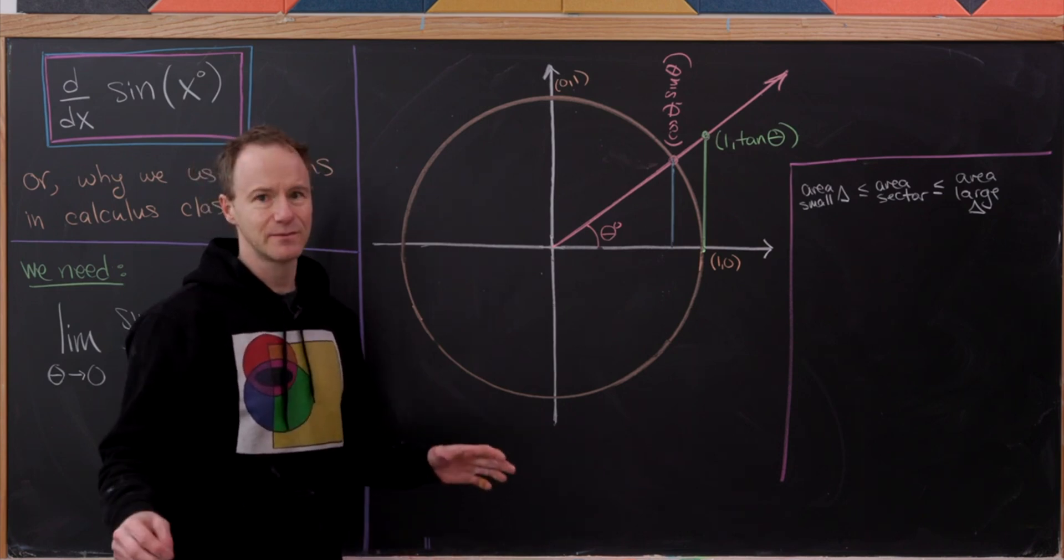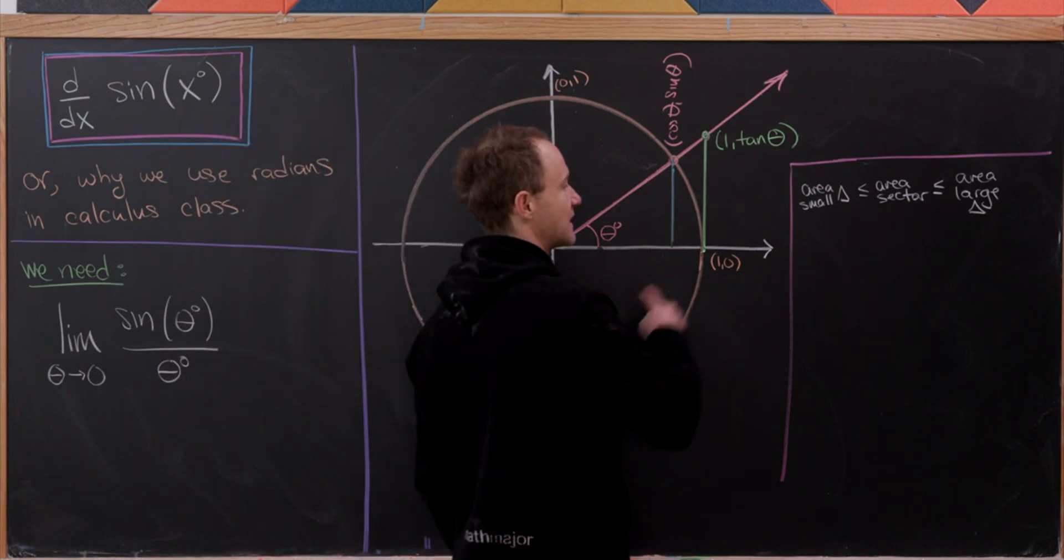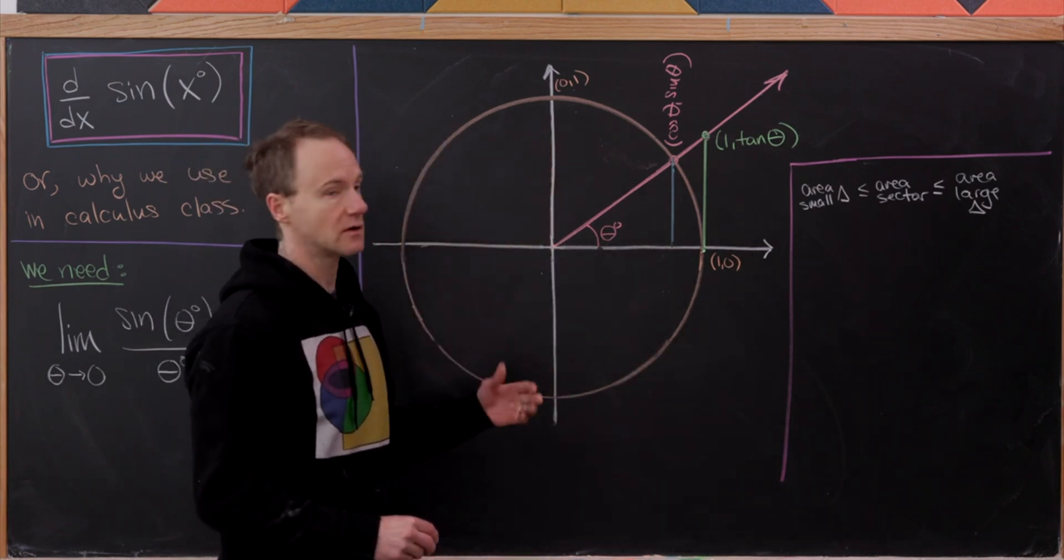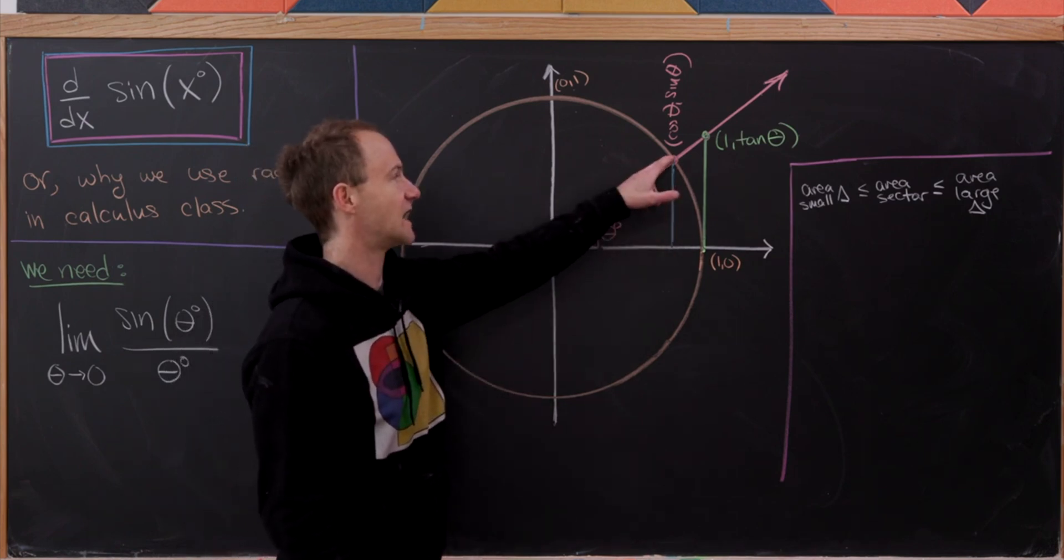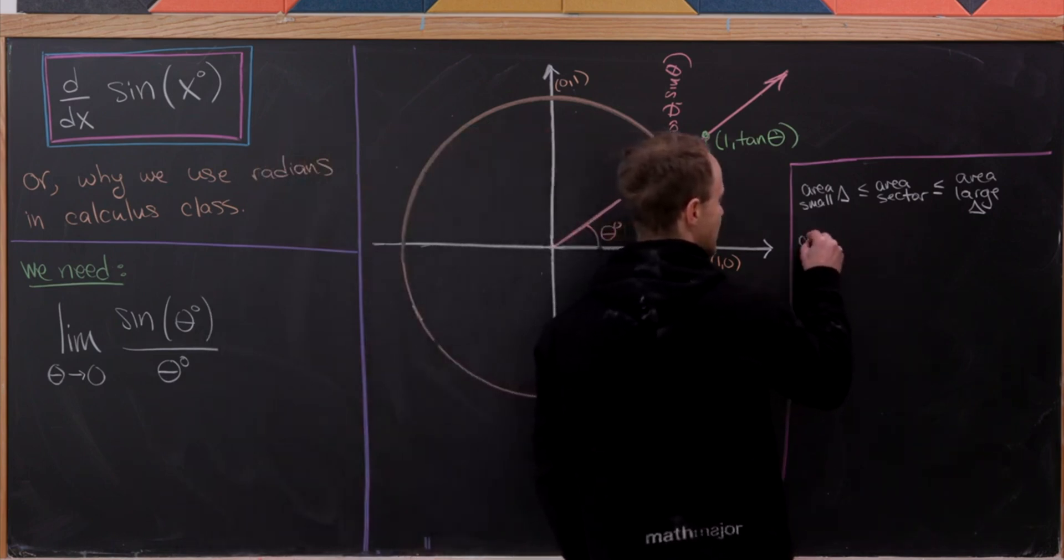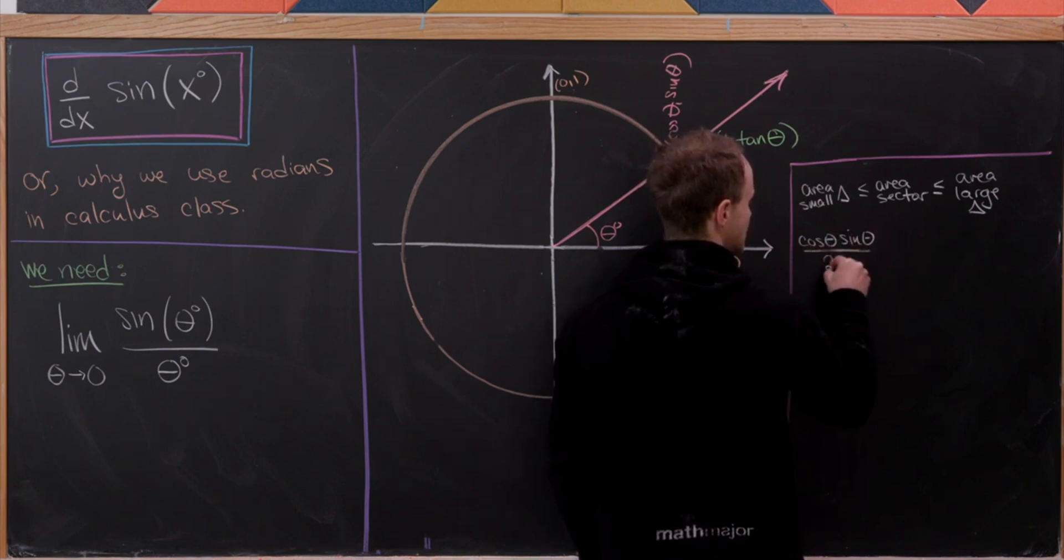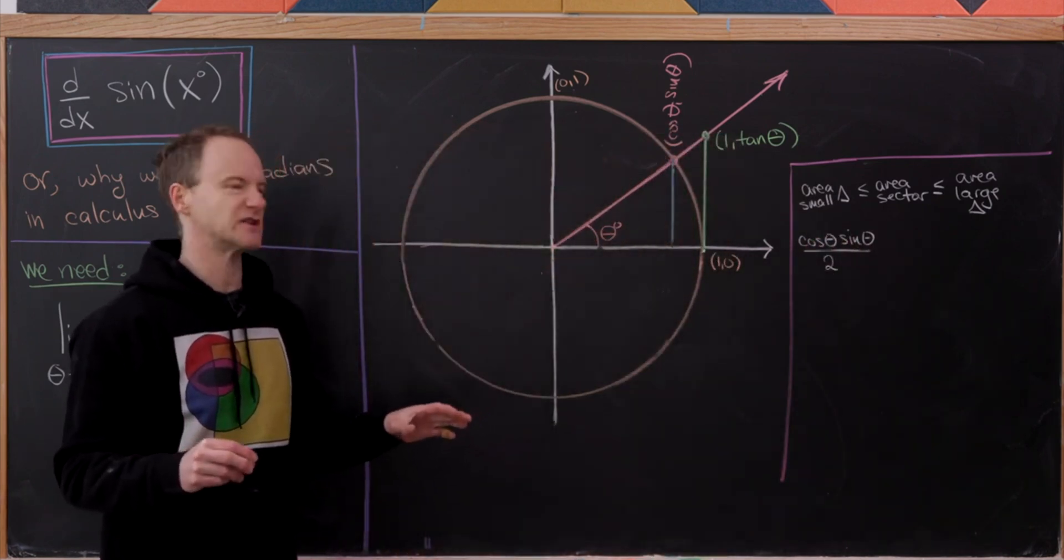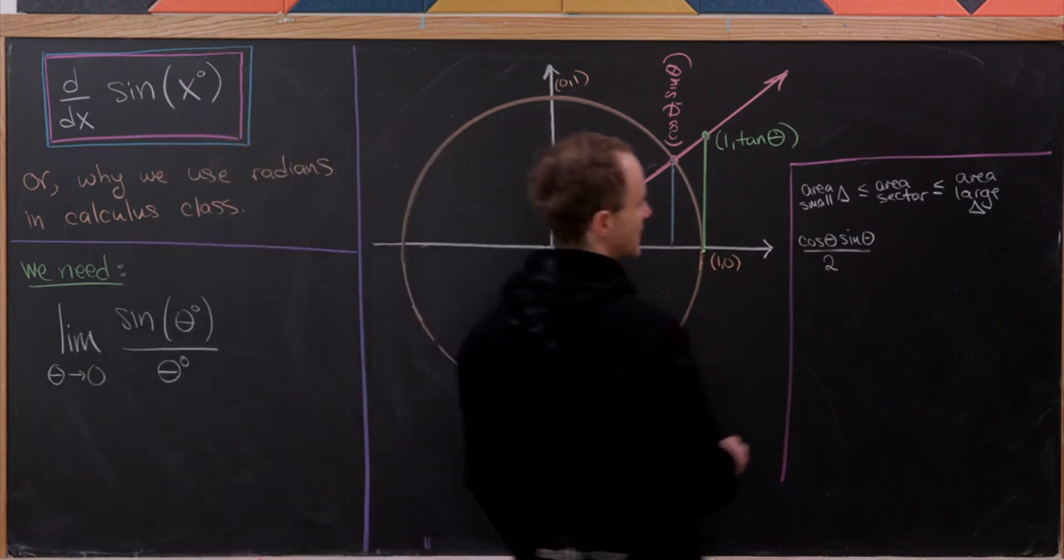But now we can simply use the formula for the area of a triangle: one half base times height to calculate the areas of these triangles. So the area of the small triangle—well, one half base times height, the base is cosine theta, the height is sine theta. We can see that by that coordinate. So this area is cos theta times sine theta over 2. And I should say here these are all in degrees, although I'm leaving the degree out just to make it a little bit less messy.